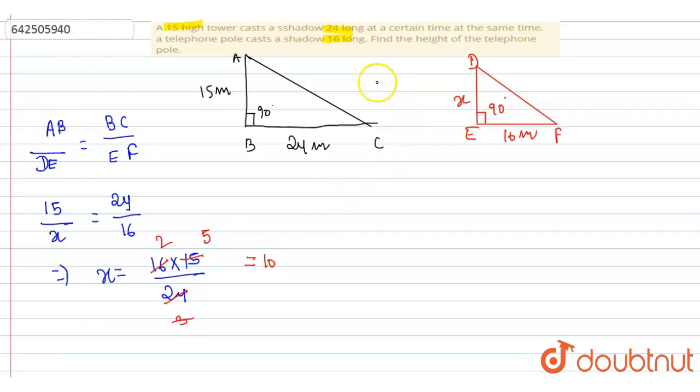Therefore, the height of the telephone pole is 10 meters. Thank you.